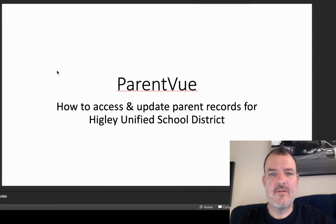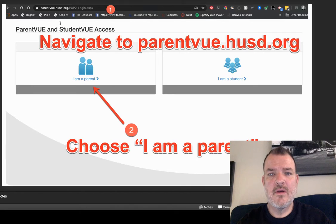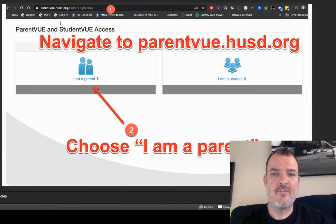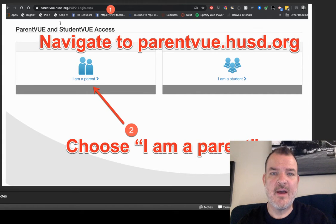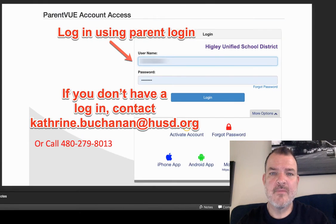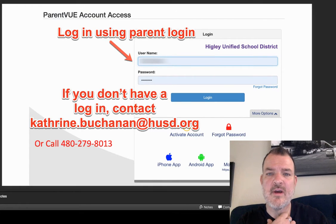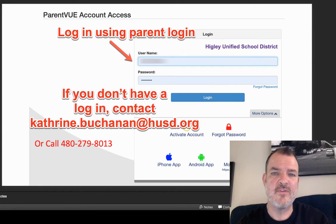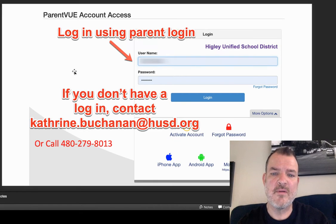To get into ParentVUE, go to your favorite web browser and navigate to parentvue.husd.org. Once there, click on 'I am a parent.' You should have received activation codes to log in to check your student's attendance, grades, and messages from teachers and staff when your student was enrolled. Use this information to log in on the screen.